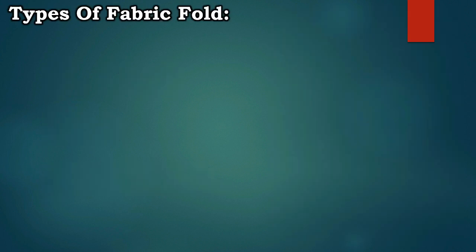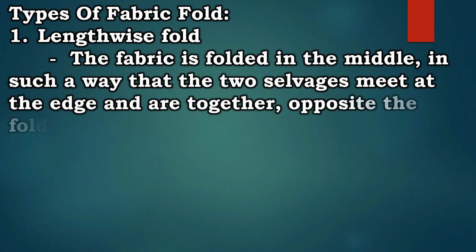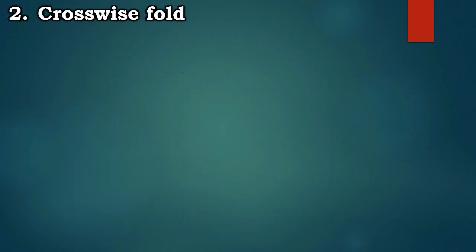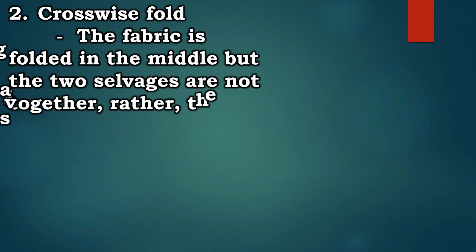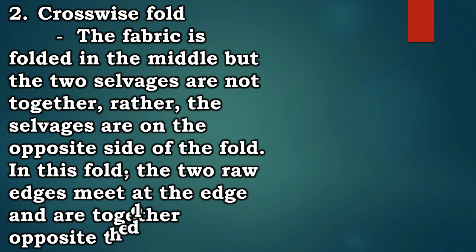Types of fabric fold: 1. Lengthwise fold — the fabric is folded in the middle in such a way that the two selvedges meet at the edge and are together, opposite the fold. 2. Crosswise fold — the fabric is folded in the middle but the two selvedges are not together; rather, the selvedges are on the opposite side of the fold. The two raw edges meet at the edge and are together opposite the fold.